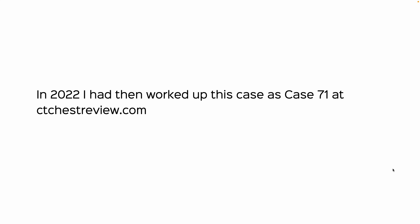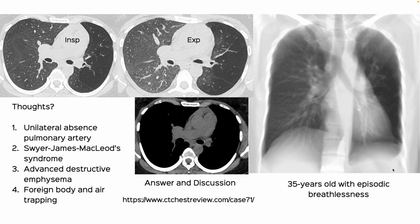I had worked this up as Case 71 at CTchestreview.com, and this is how I presented it. Shown here is the mean reconstruction — that's the small left pulmonary artery. The question was: is this UAPA, Swyer-James MacLeod syndrome, emphysema, or foreign body and air trapping? This is just classic Swyer-James MacLeod syndrome.